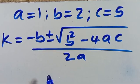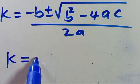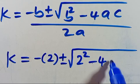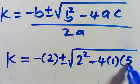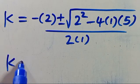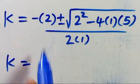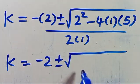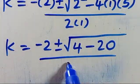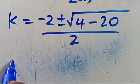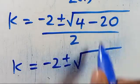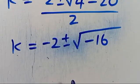So from here, we are going to have k equals minus 2, positive or negative root of 2 squared minus 4 times 1 times 5, all divided by 2 times 1. So from here, we have k equals minus 2, positive or negative root of 2 to the power of 2 gives us 4, minus 4 times 1 is 4 times 5 gives us 20, then all divided by 2. So from here, we have k equals minus 2, positive or negative root of 4 minus 20, which gives us minus 16, then all divided by 2.